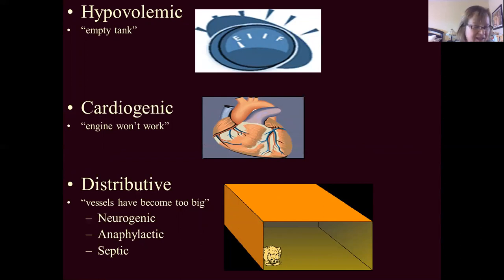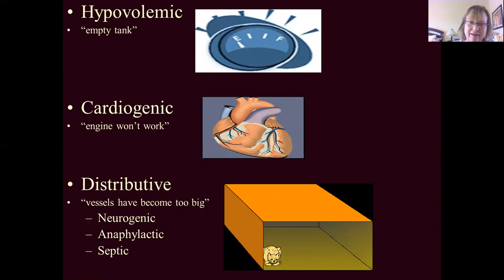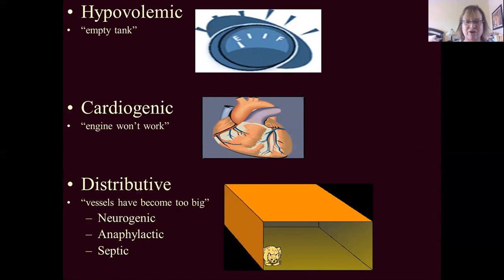Cardiogenic shock is caused by heart failure of any kind. Third, distributive shock — a category of three different underlying mechanisms. Imagine a big bag with a tiny cat inside: the vessels become so big that what's inside seems very tiny. In distributive shock, our vessels become very large. There are three underlying mechanisms: neurogenic shock, anaphylactic shock, and septic shock — which is very common in hospital settings.